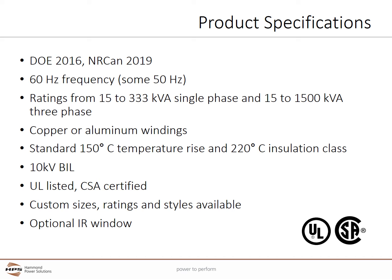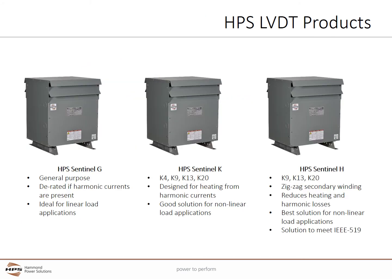Units can be ordered with an optional IR window. HPS has three separate Sentinel product lines. The Sentinel-G is a general purpose isolation transformer. It would have to be de-rated if harmonic currents are present. It is ideal for linear load applications such as motors, resistive heat, and some lighting.